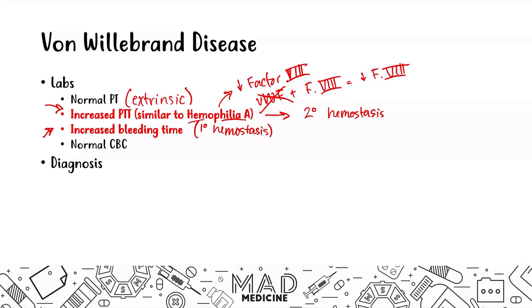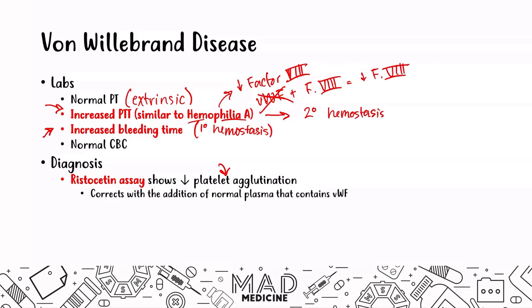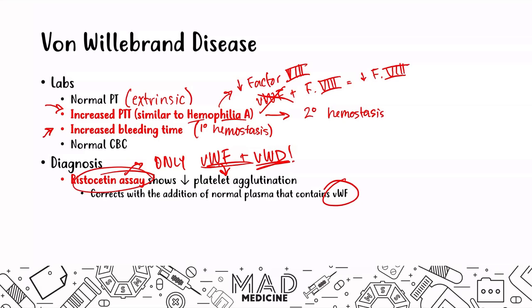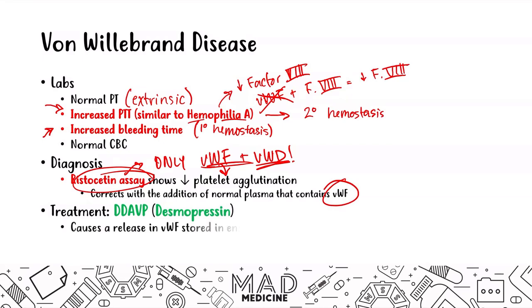For diagnosis, you can perform the Ristocetin Assay, which will show decreased platelet agglutination. This corrects with the addition of normal plasma containing VWF. The Ristocetin Assay is specifically associated with von Willebrand factor and von Willebrand disease — just remember Ristocetin Assay equals von Willebrand disease. For treatment, you can give DDAVP (Desmopressin), which causes release of VWF stored in endothelial cells. You can also give Factor VIII, and recombinant Factor VIII already contains VWF.